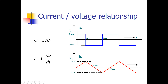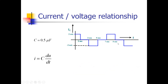Then the current is switched to a positive value again, and the positive area increases, so the voltage goes up linearly. Here in the middle it is again 0 volts, and then it reaches its maximum positive value, and so on. This is the relationship when we supply a capacitor with a constant current switching between positive and negative values, and we see what happens to the voltage across that capacitor.